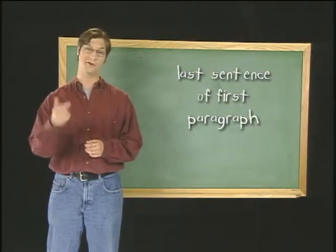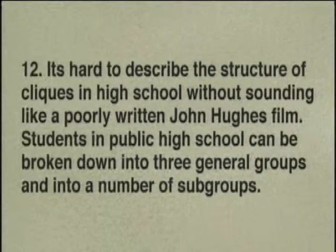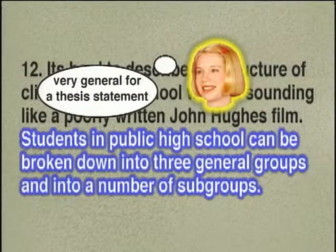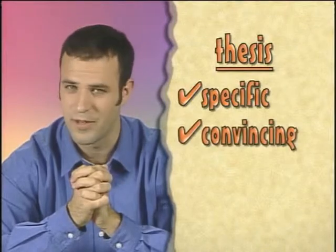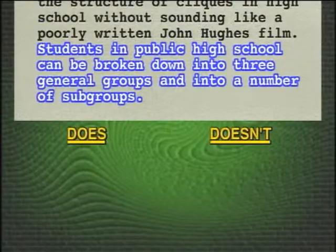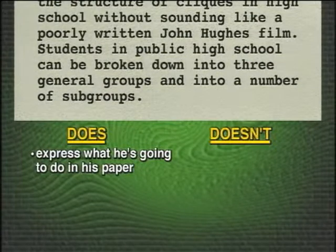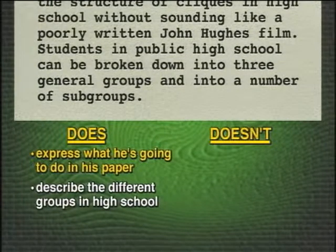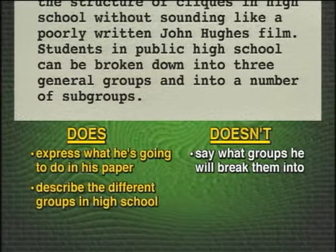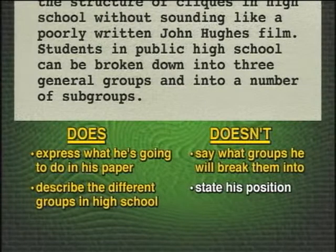Let's go back to this last sentence of the first paragraph. Sam thinks Nathan's sentence is too general for a thesis statement. As we said earlier, the thesis should be specific and convincing — it should reflect the aim of the paper. This last sentence does express what he's going to do in his paper — describe the different groups in high school — but he doesn't say what groups he'll break them into, and he doesn't state his position or opinion of high school groups. He needs to make the statement more focused.